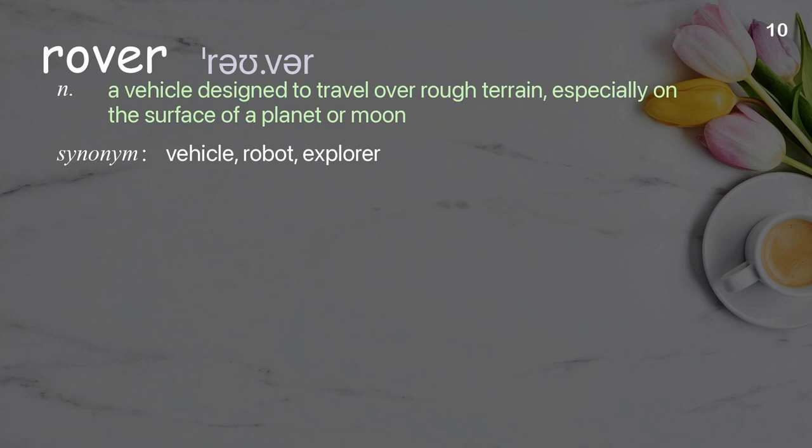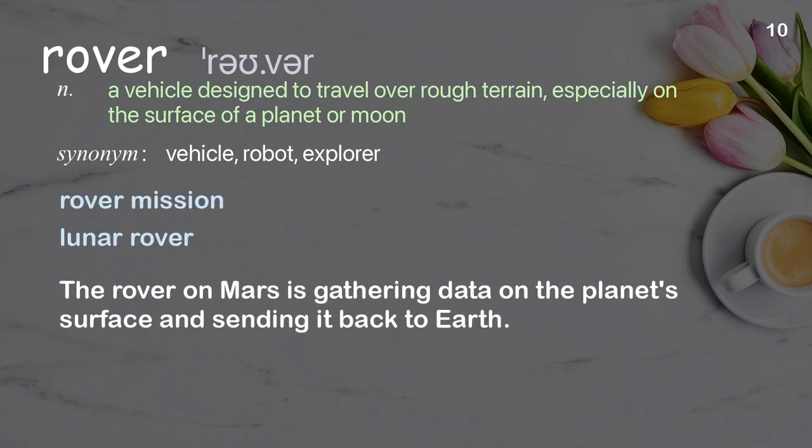Rover: A vehicle designed to travel over rough terrain, especially on the surface of a planet or moon. Example: The rover on Mars is gathering data on the planet's surface and sending it back to Earth.